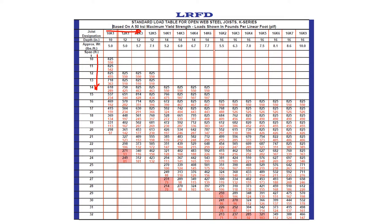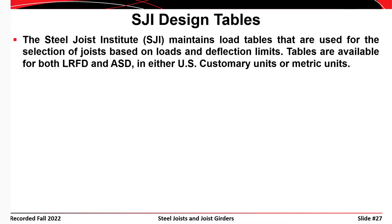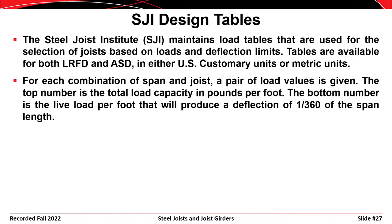Generally, as that last number — K1, K3, K4, K6 — gets larger, the joist gets stronger and also heavier. For each combination of span length and joist designation, two numbers are given: the top number is the total load capacity of the joist for that span in pounds per foot, and the bottom number is the live load in pounds per foot that will produce a deflection of L/360.